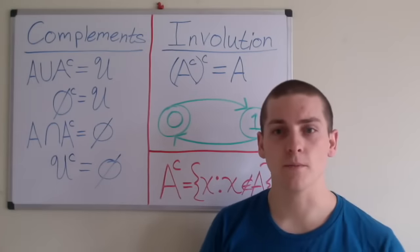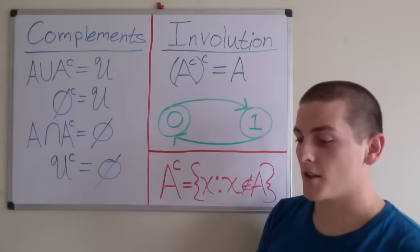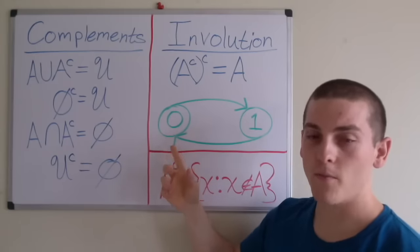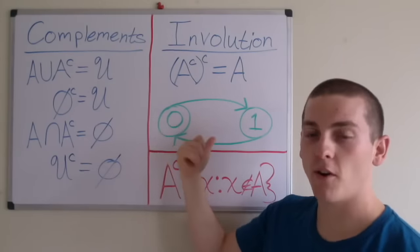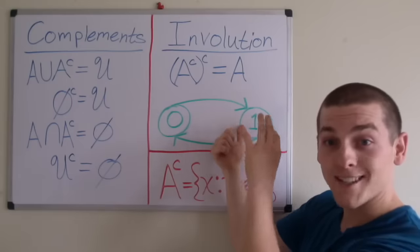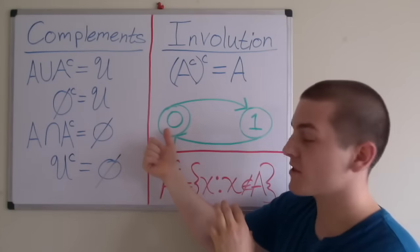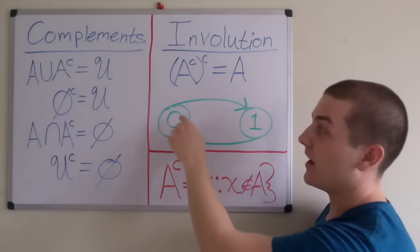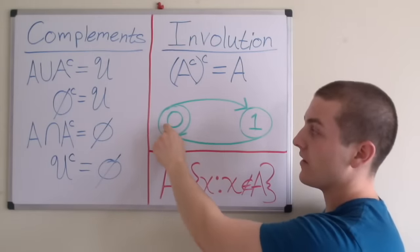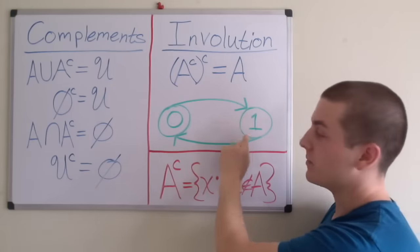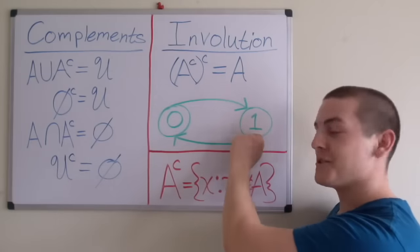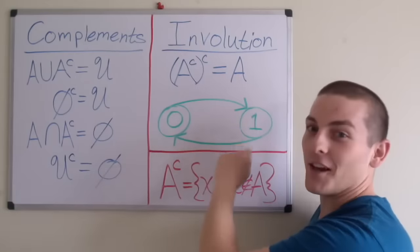The next one is the law of involution. Involution states that if we have a state 0 and we feed that state to the complement function, it gets to state 1. If we again feed it through the complement function, it will result in state 0 again. So if we fed set A through this cyclical function: A feed it through complement, we get A complement. Feed it back through the function, we get A complement complement, which equals A. Then we could have A complement complement complement, which would be A complement. It's cyclical.